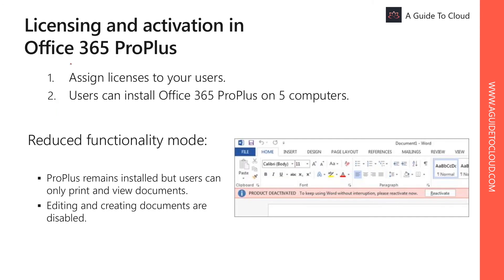Semi-annual channel receives feature updates every 6 months, in January and July. To deploy Office 365 Pro Plus to users in your organization, you start by assigning licenses to your users. Then each user can install Office 365 Pro Plus on up to 5 computers, and each installation is activated and kept activated automatically by cloud-based services associated with Office 365.